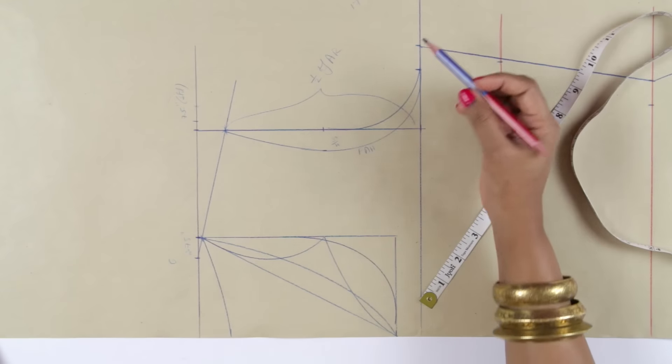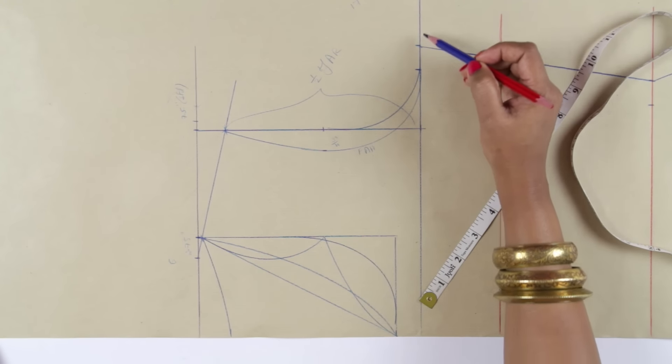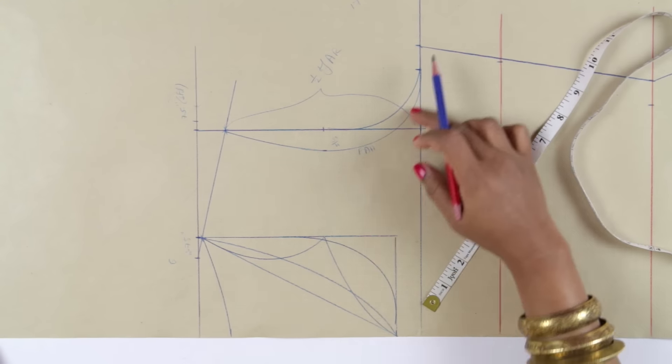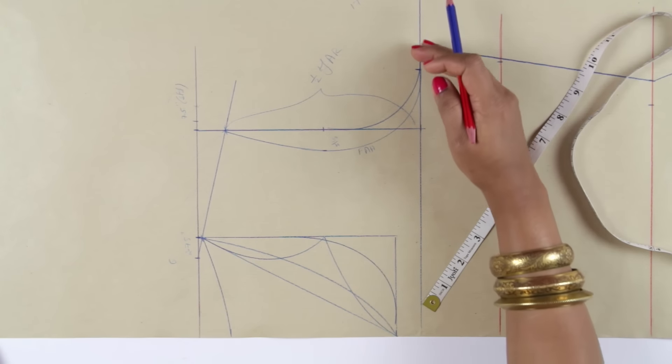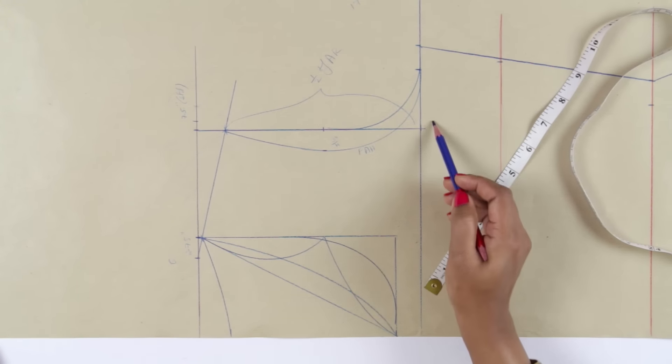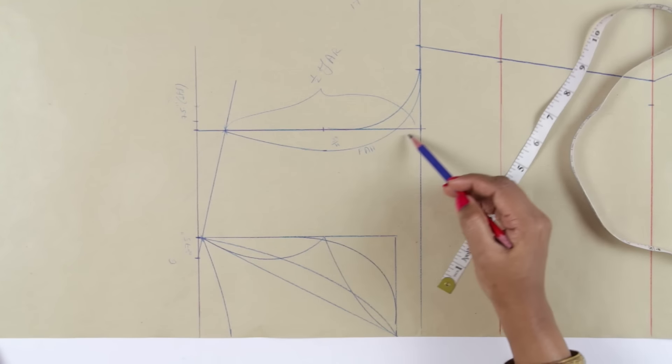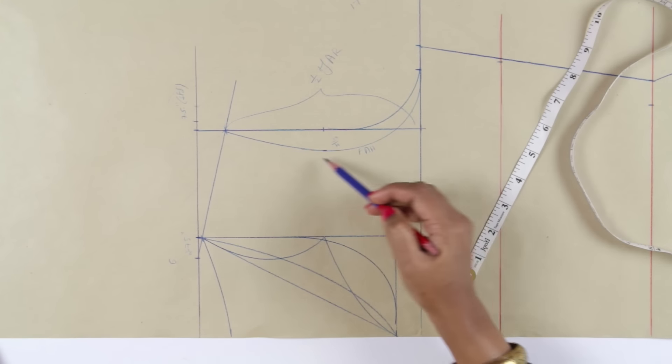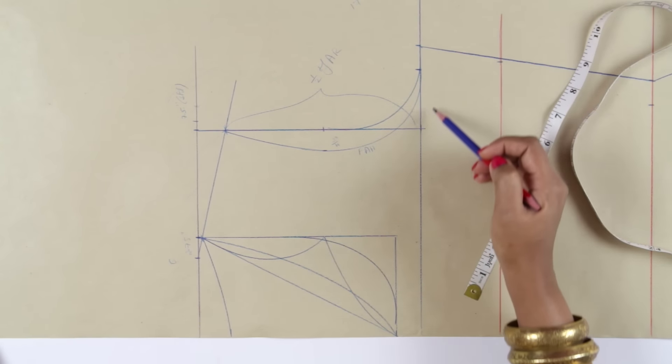If at all in some body proportions, if you are not getting this measurement, if you are not getting half your armhole, if it's coming lesser than that, that means you need to shift the chest line downwards and redraw the armhole so that your armhole becomes bigger and you get your required measurement.